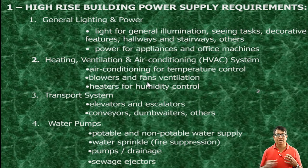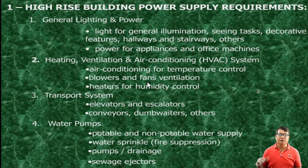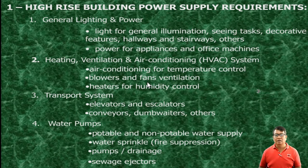The blowers in basement areas maintain proper air pressure. Number three is the transport system — elevators, escalators, conveyors, dumbwaiters, and others. These all require power supply. Conveyors are sometimes built-in types. A dumbwaiter is similar to an elevator but is not used to transport passengers — it is used to transport supplies and logistics from the lowest part to the highest story, such as office supplies or kitchen supplies.